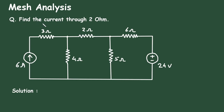Mesh analysis. Question: Find the current through 2 ohm resistance. Here we can see in this circuit, we have to find the current through this 2 ohm resistance by using mesh analysis method.